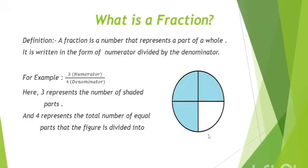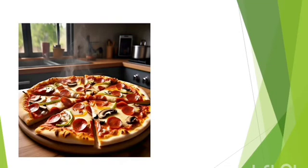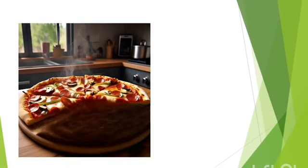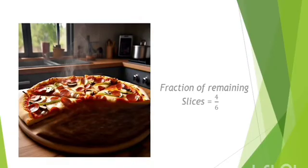Let's take a real life example. Suppose you went to a restaurant with your friends. You ordered a pizza of 6 slices and one of your friend ate 2 slices. So 4 slices remained. Fraction of remaining slices is 4 upon 6.